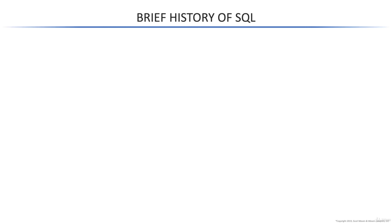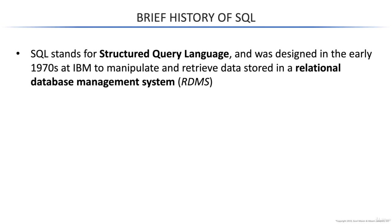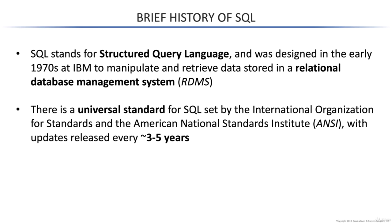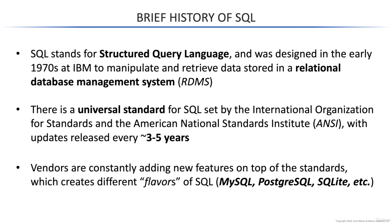Let's talk briefly about how SQL came to be and how it's evolved into the various flavors we see today. The language has been around since the 1970s, when it was created to handle the manipulation and retrieval of data stored in relational database management systems. Since then, we've developed standards for SQL, which are updated by the major standards boards roughly every three to five years. Vendors are constantly trying to outdo each other by adding new features on top of these universal standards, and this is what creates the various flavors of SQL.